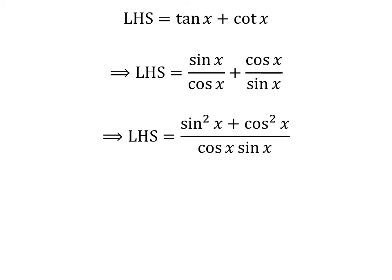Addition of fractions gives us the left hand side of the identity is equal to square of sin of x plus square of cosine of x, upon cosine of x times sin of x. We know square of sin of x plus square of cosine of x is equal to 1, so the left hand side is equal to 1 upon cosine of x times sin of x.